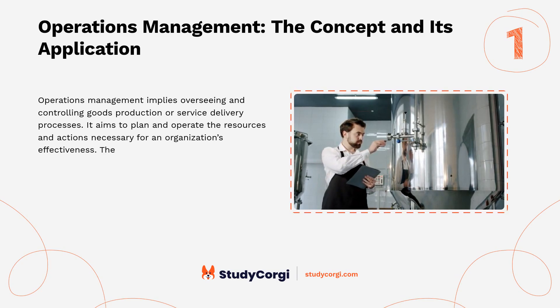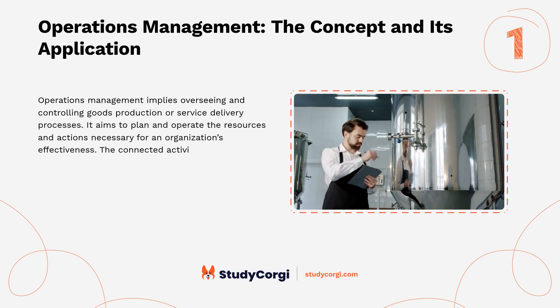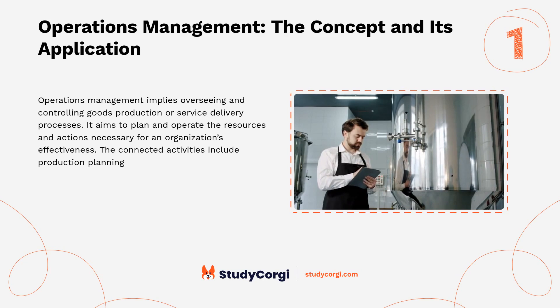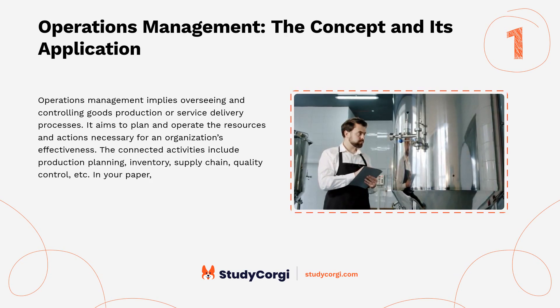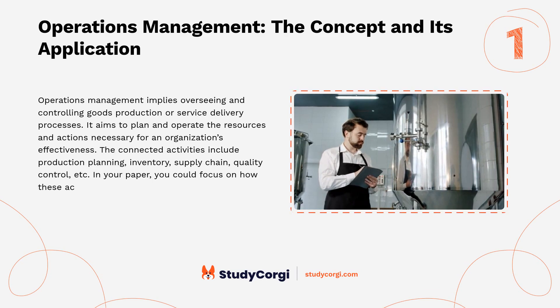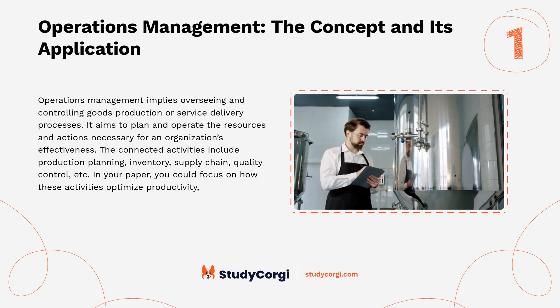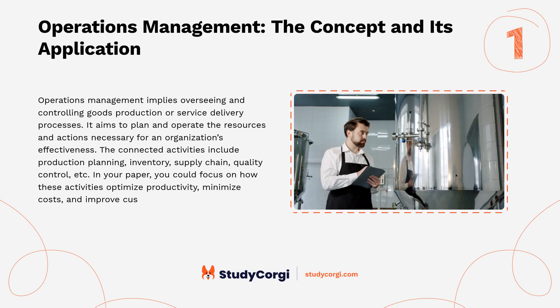The connected activities include production planning, inventory, supply chain, quality control, etc. In your paper, you could focus on how these activities optimize productivity, minimize costs, and improve customer satisfaction.